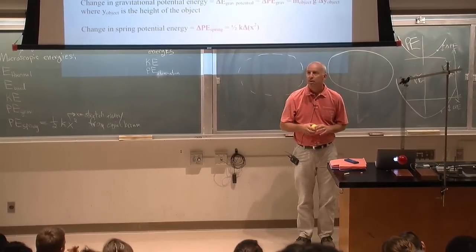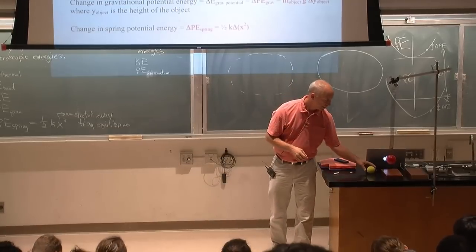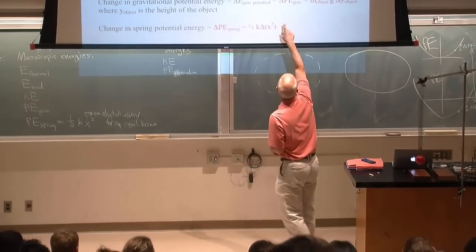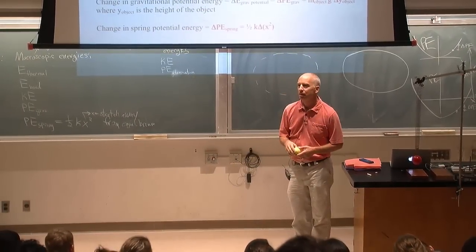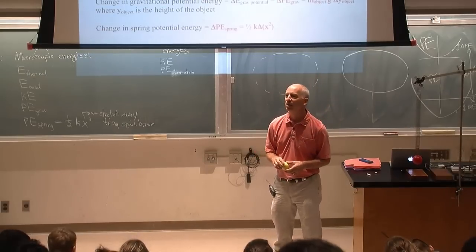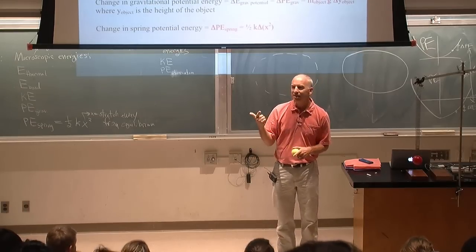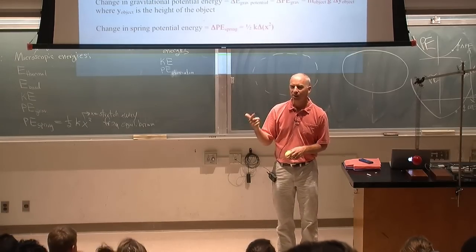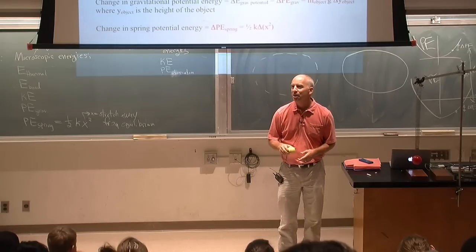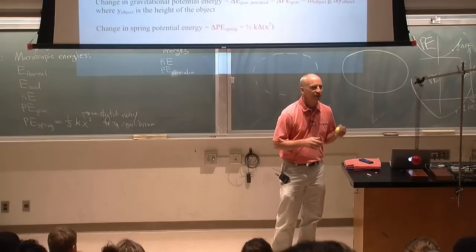On the other hand, kinetic energy has a definite value: one-half the mass times the speed squared. One-half is a positive number, the mass is a positive number, and the square of any number is a positive number. So three positive numbers, the kinetic energy has to be positive.